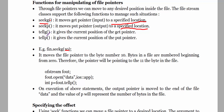tellg and tellp are functions that tell us the current position of the pointers. tellg gives the current position of the get pointer, and tellp gives the current position of the put pointer.